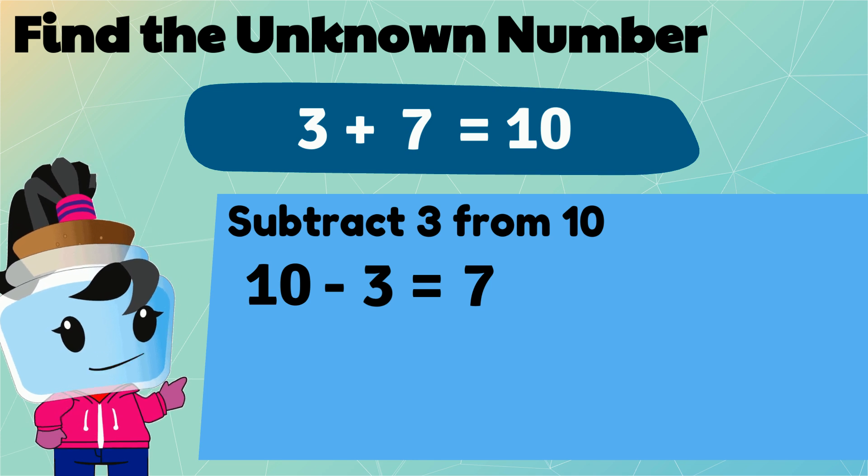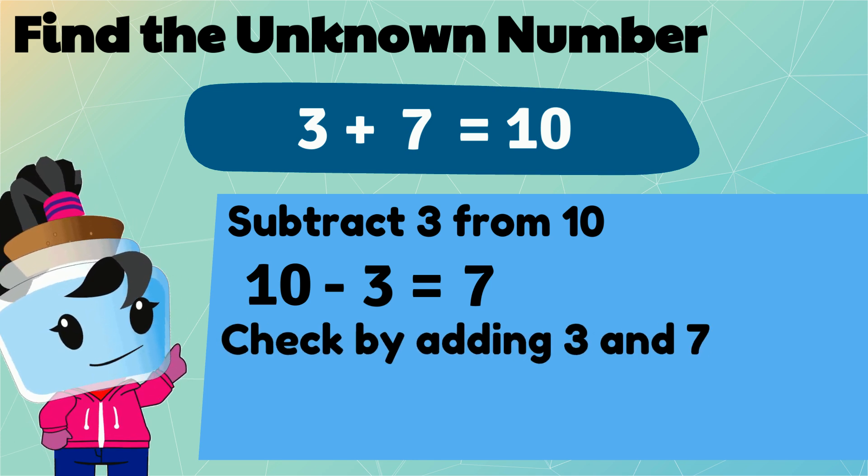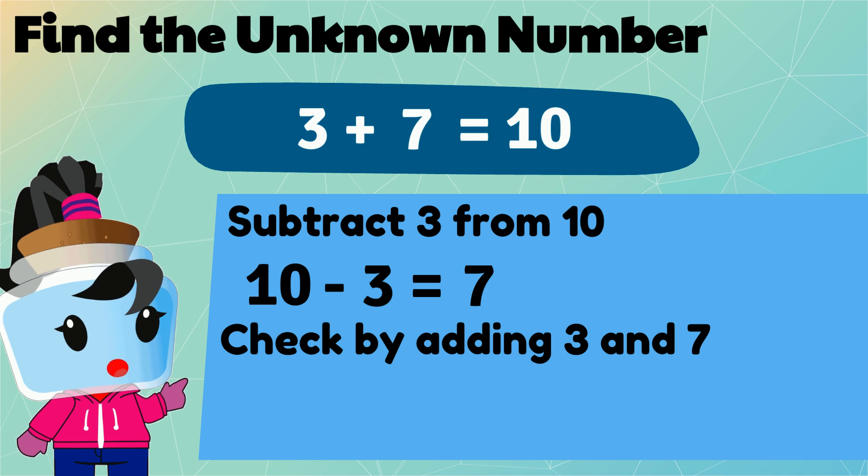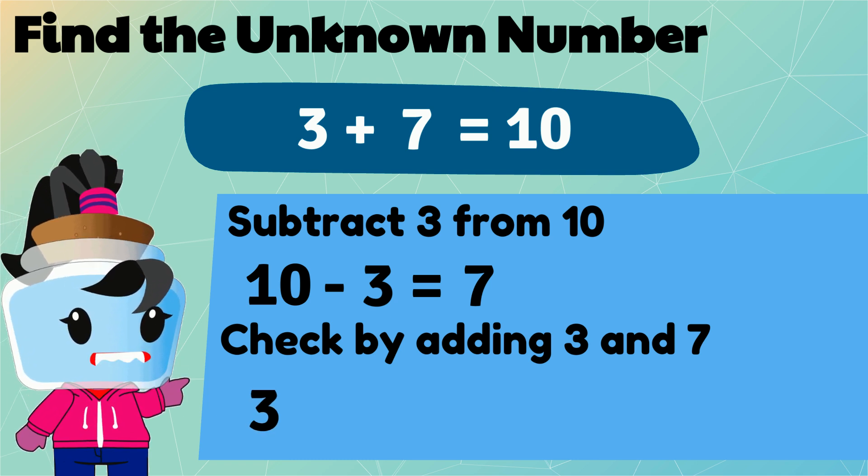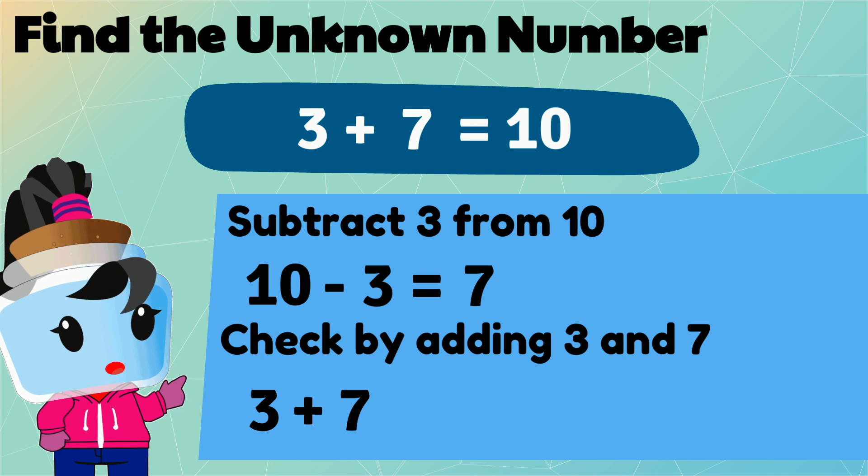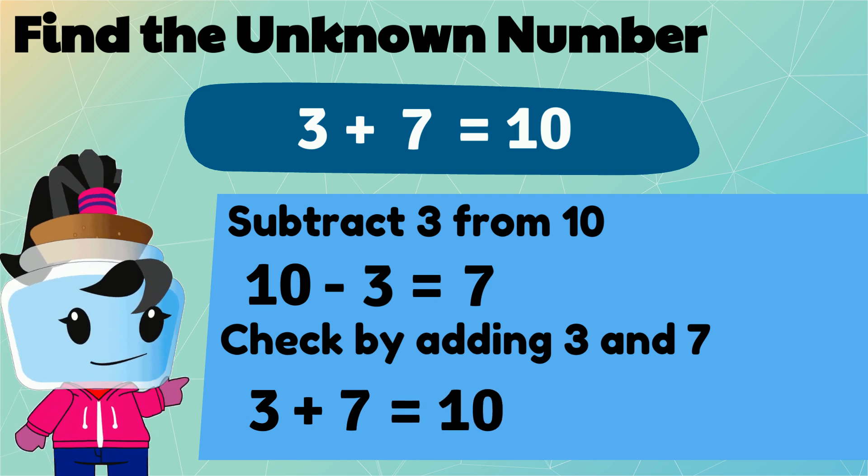We can cross check this by adding 3 and 7. Since 3 plus 7 equals 10, we've got the right number.